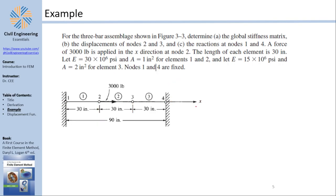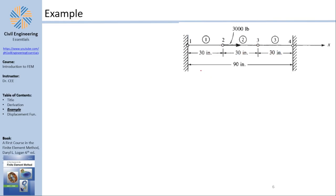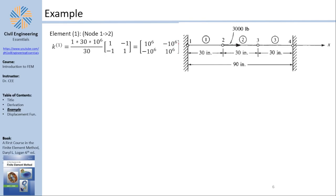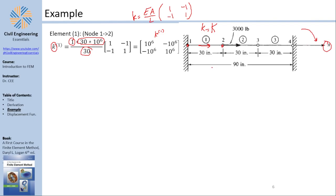For each element, the stiffness matrix is k = EA/L · [[1, −1], [−1, 1]]. Element 1 connects nodes 1 and 2: k1 = (A · E / 30) · [[1, −1], [−1, 1]]. Element 2 connects nodes 2 and 3, and has the same E and A as element 1 with the same length 30, so k2 is numerically equal to k1 — physically different, because it connects different nodes.